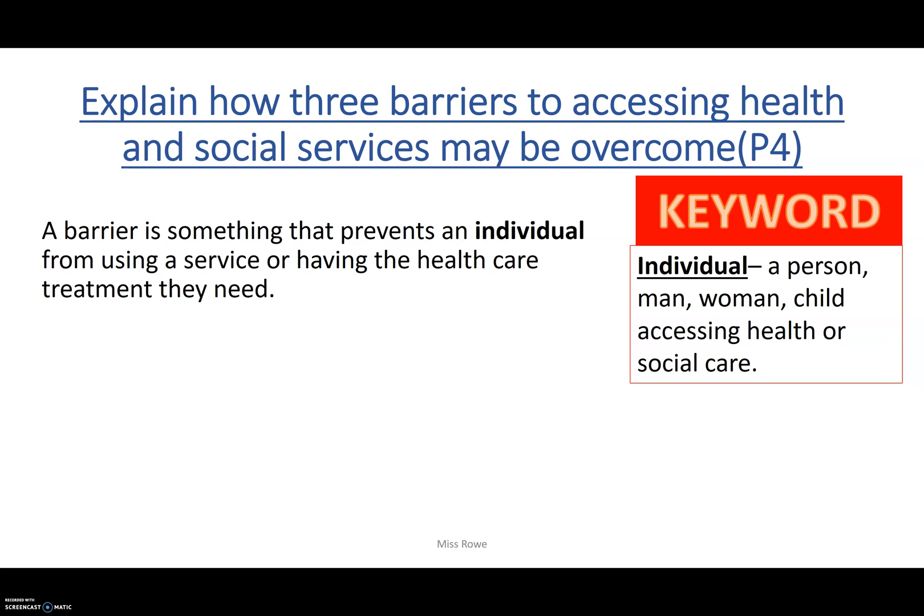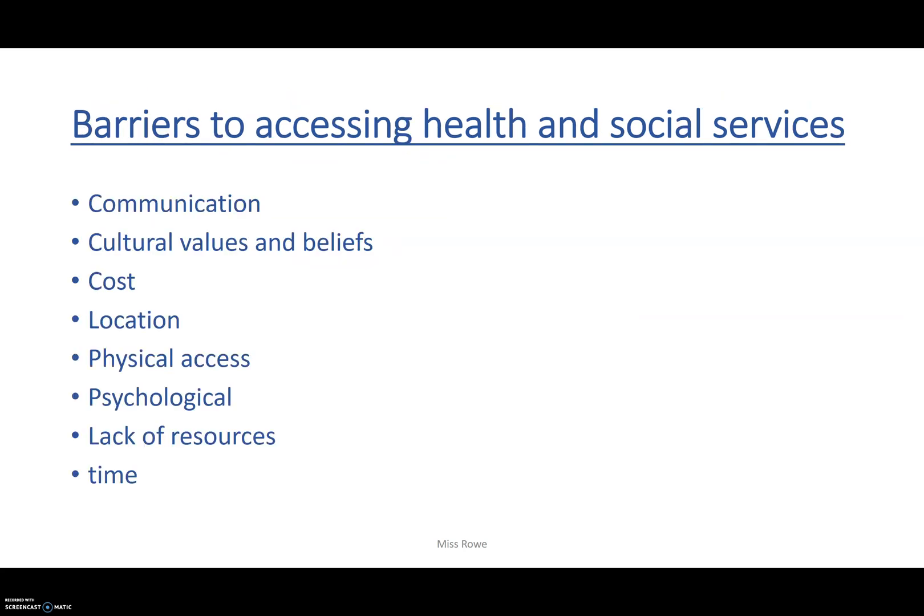For P4, we're going to look at some of the barriers — what we want to think of is why someone would not be able to use a healthcare or social care service because of barriers. So here's a list. Communication — it's a barrier because if you speak a different language, or say you are deaf and need someone to sign for you but there's no one on site, these people obviously need an interpreter. That could be an example of a communication barrier. If there's no Braille for people who are blind, or large print for those with visual impairments, that's another communication barrier.